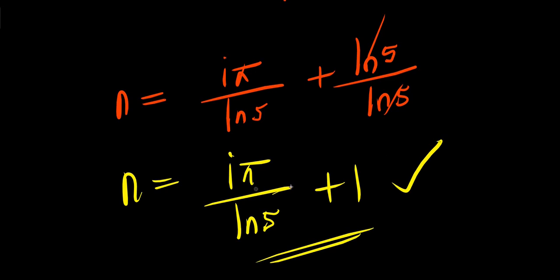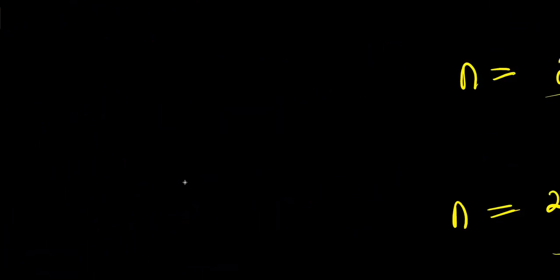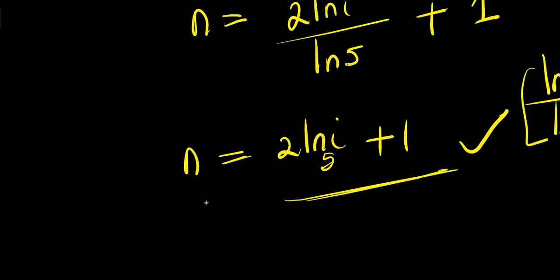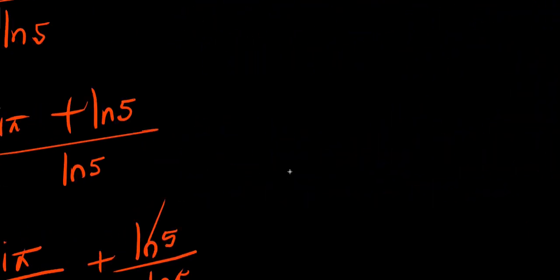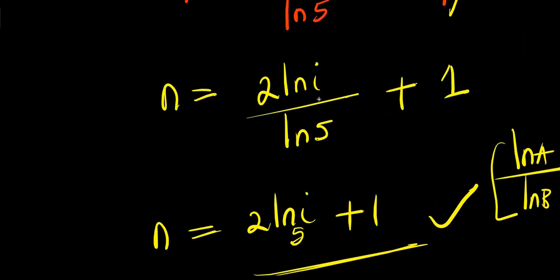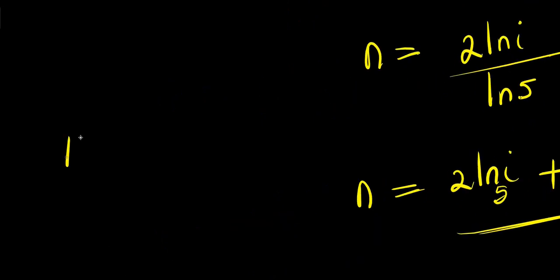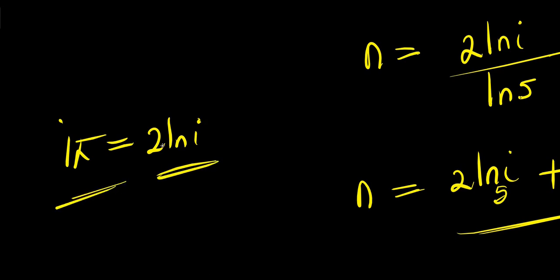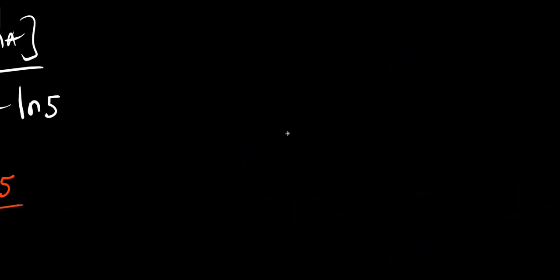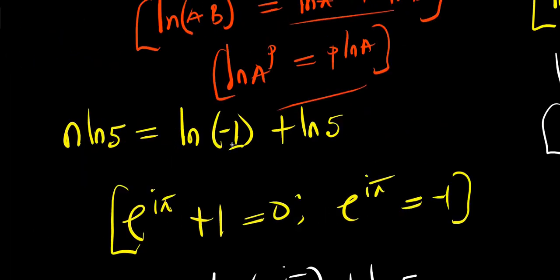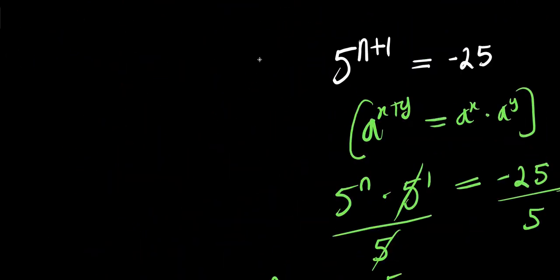This is also a valid solution. So both answers are absolutely correct — here we have i times pi, and in the first approach we have 2 times natural log of i, which is the same thing, since i times pi equals 2 times natural log of i. That is how you solve this exponential problem. Don't forget to subscribe and share. Thank you and goodbye.